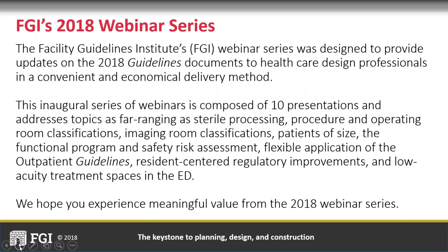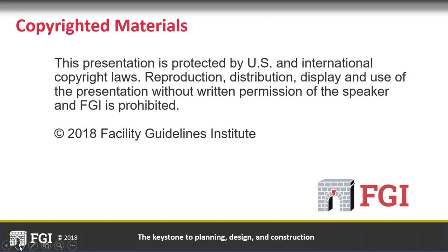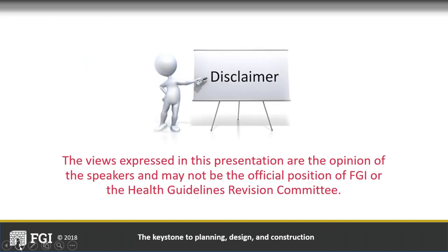FGI is proud to host this series of continuing education webinars, developed to broaden understanding of the guidelines documents, the revision process, and to highlight key changes in the current edition of the guidelines. To obtain AIA credit, you will need to coordinate with the person who registered your organization on MADCAD. Each attendee seeking AIA Learning Units must complete a 10-question quiz on the content of this webinar to receive AIA continuing education credits. The views and opinions expressed are those of the presenters and may not represent the official position of FGI nor the HGRC.